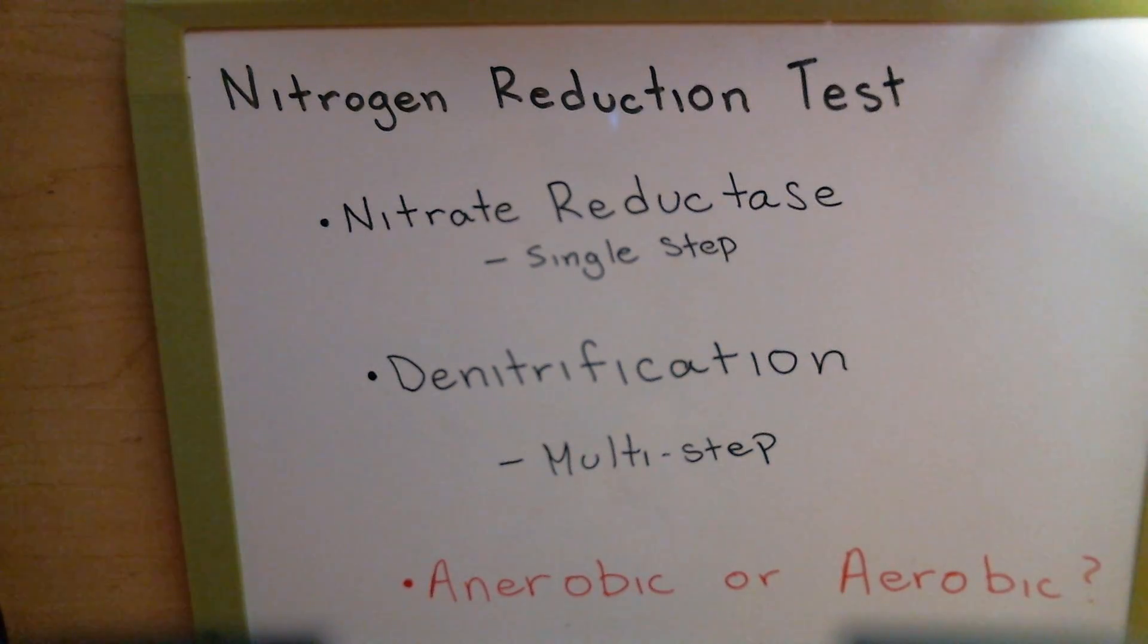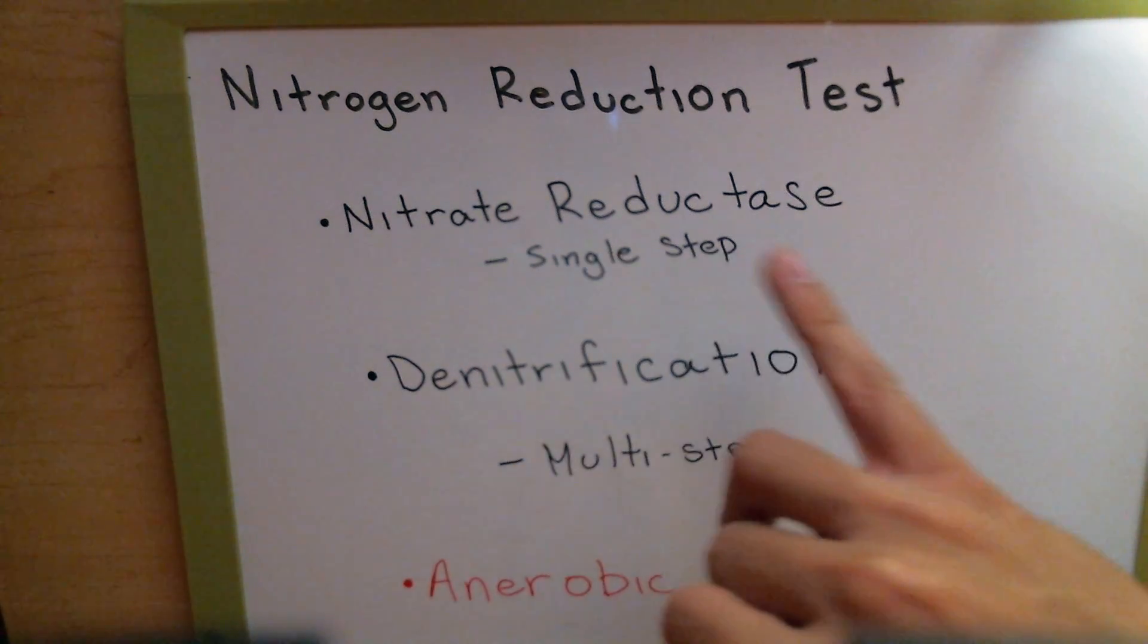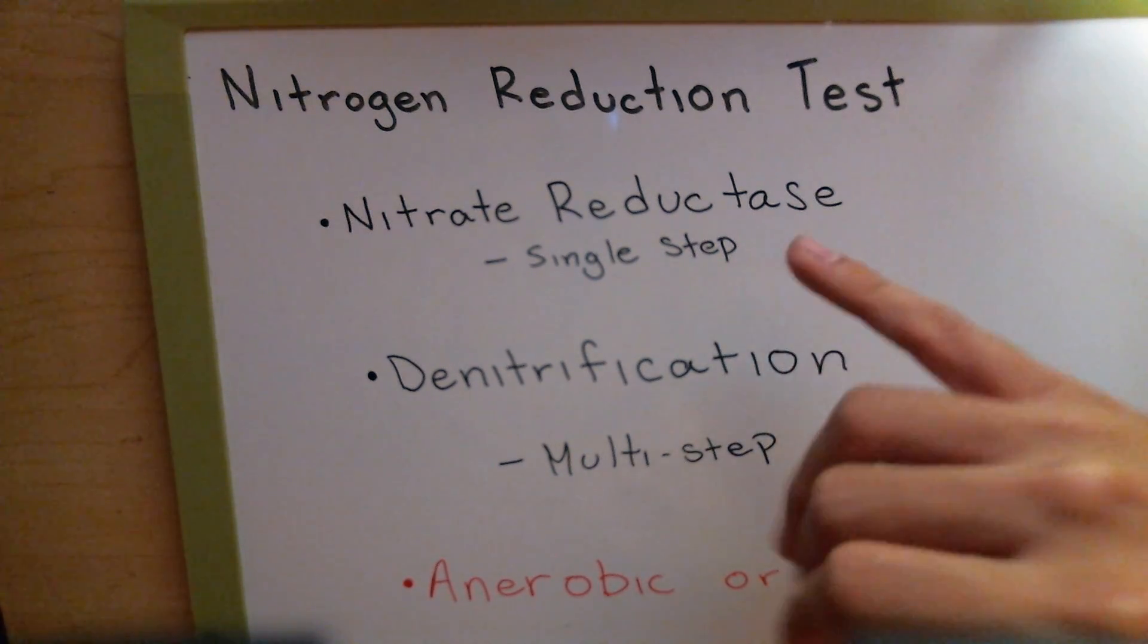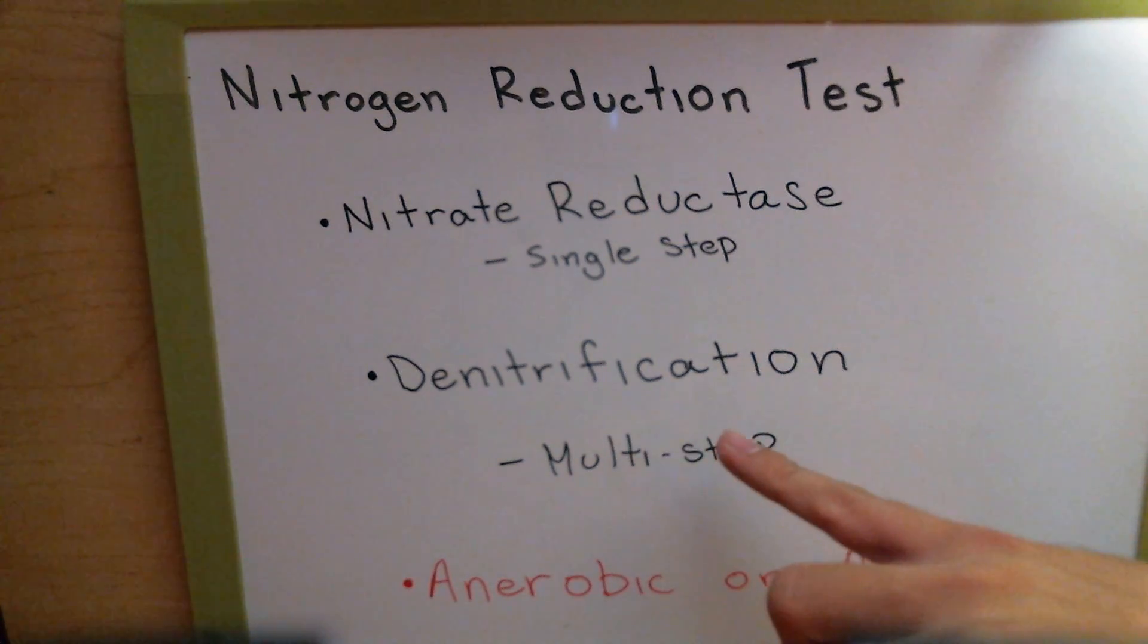So as we saw with nitrogen reduction, there's a couple ways to do it. Either the bacteria uses nitrate reductase, and all that does is the reduction in a single step. But if it goes through the process of denitrification, that's a multi-step process. If you guys need more help with this, look back to your notes on the PowerPoints. I think it should probably be on the first or second day. You guys should have those PowerPoints. Now the question that I want to ask you guys, is this process anaerobic or aerobic?